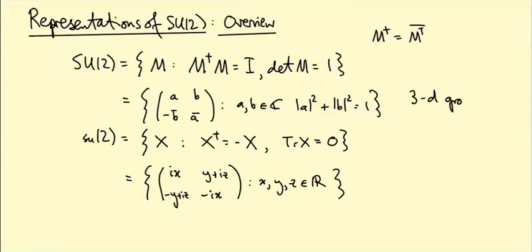This is a three-dimensional group, because A and B each have real and imaginary parts, giving four variables: Re(A), Im(A), Re(B), Im(B). The sum of squares of those equals one — that's the determinant-equals-one condition. So four variables with one condition cuts us down to three degrees of freedom, making it a three-dimensional group.